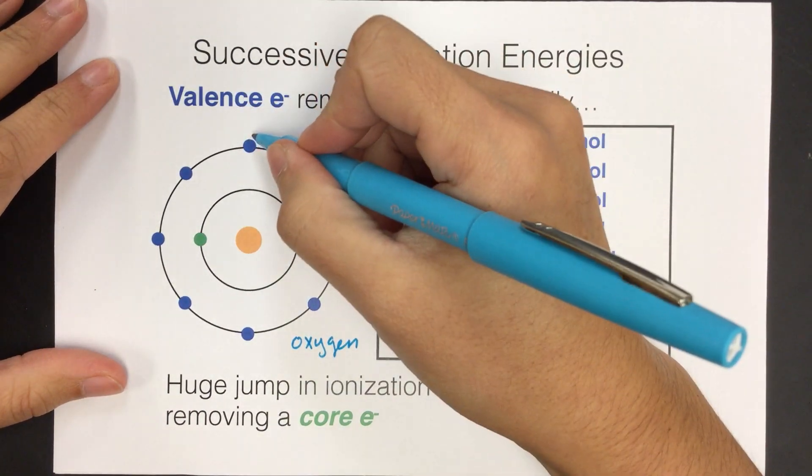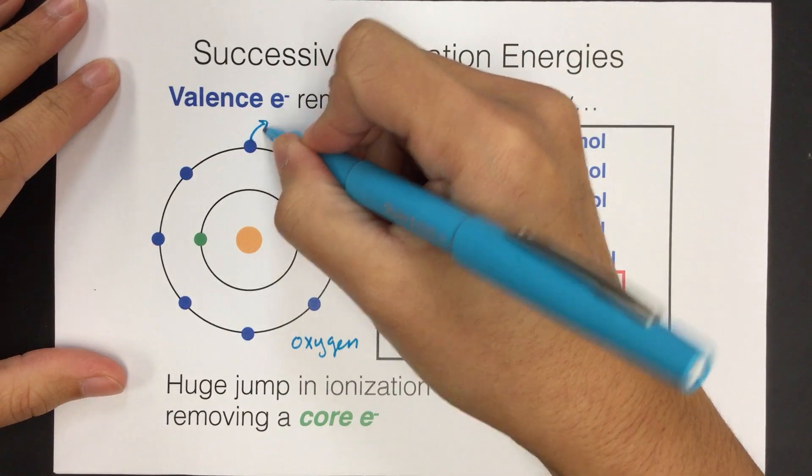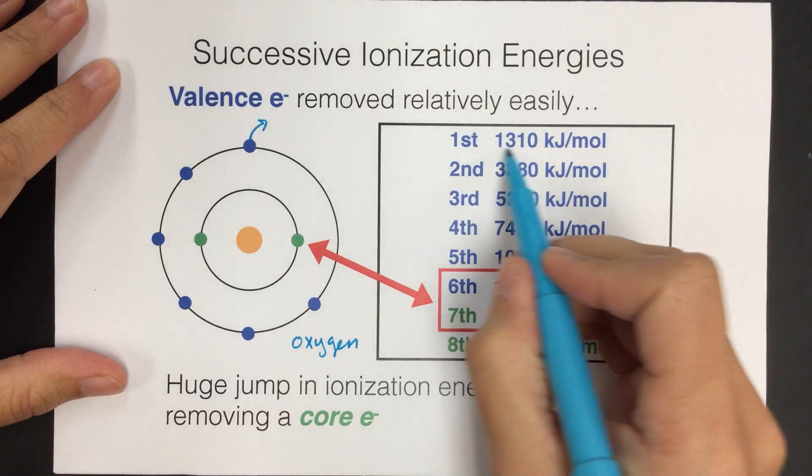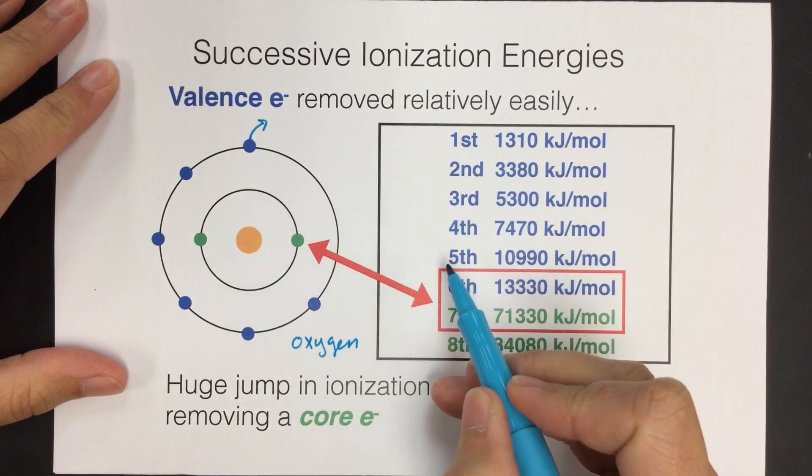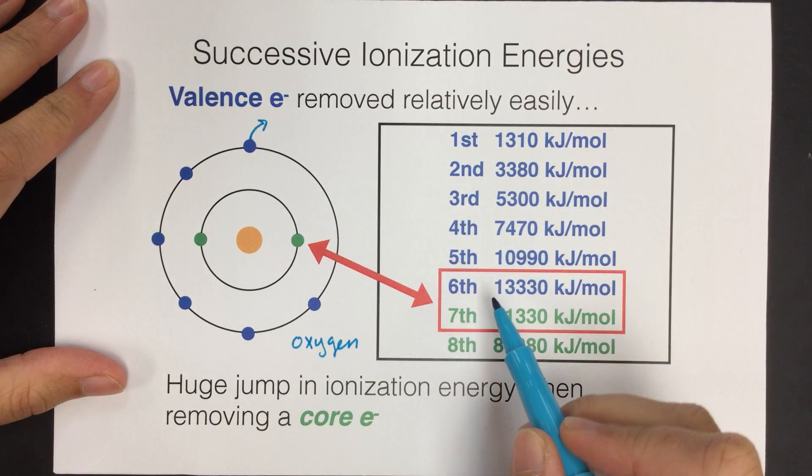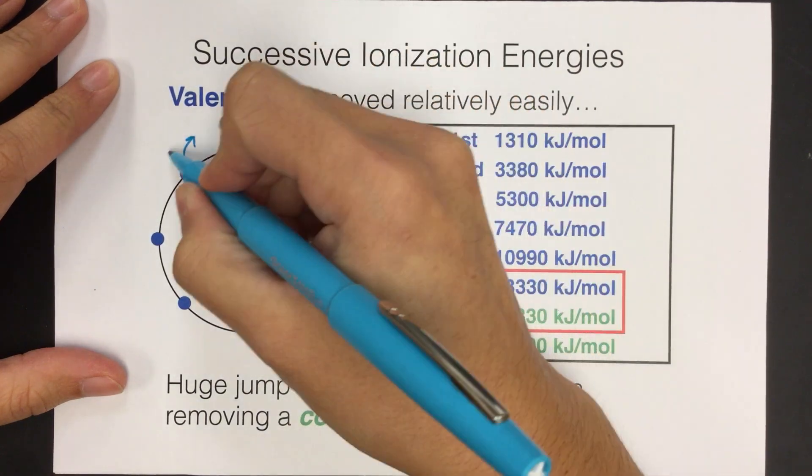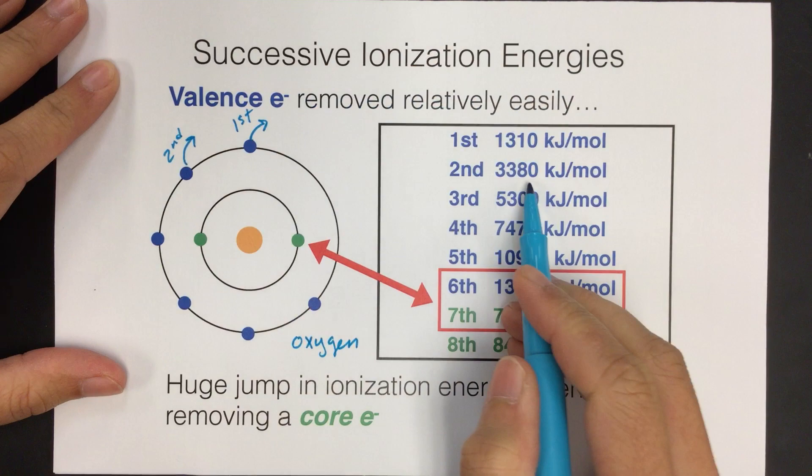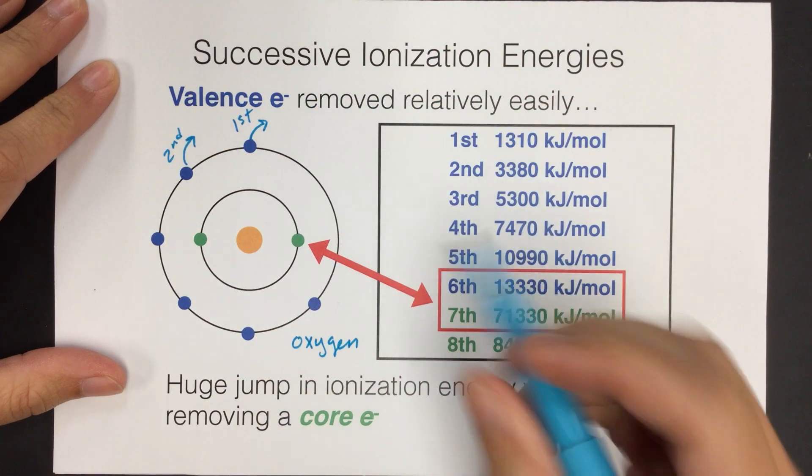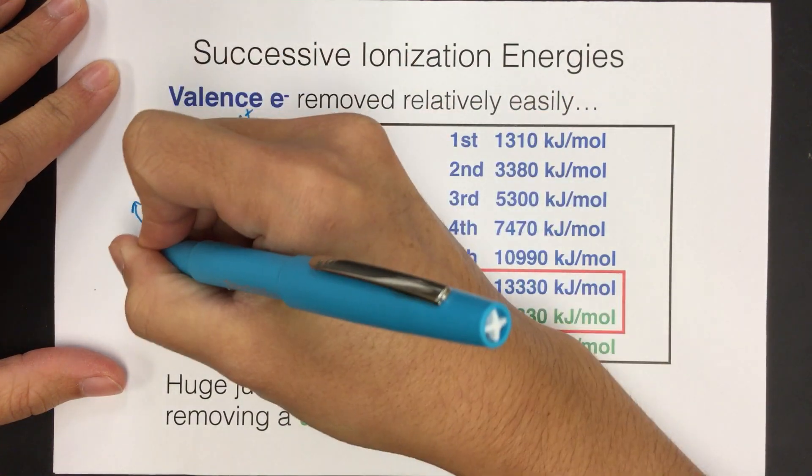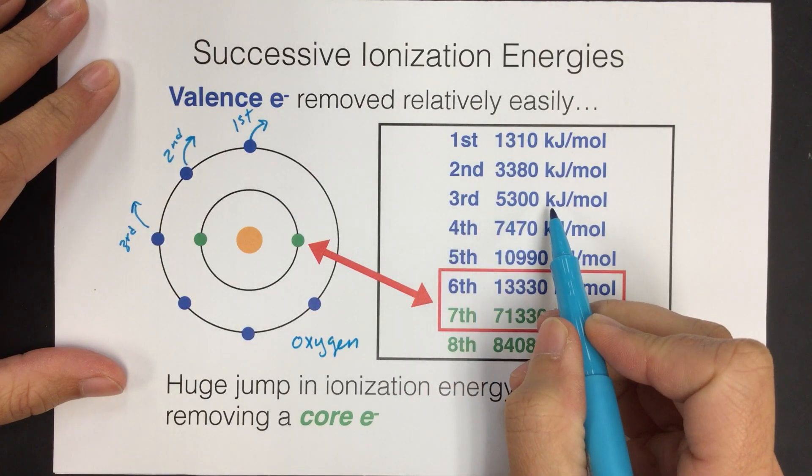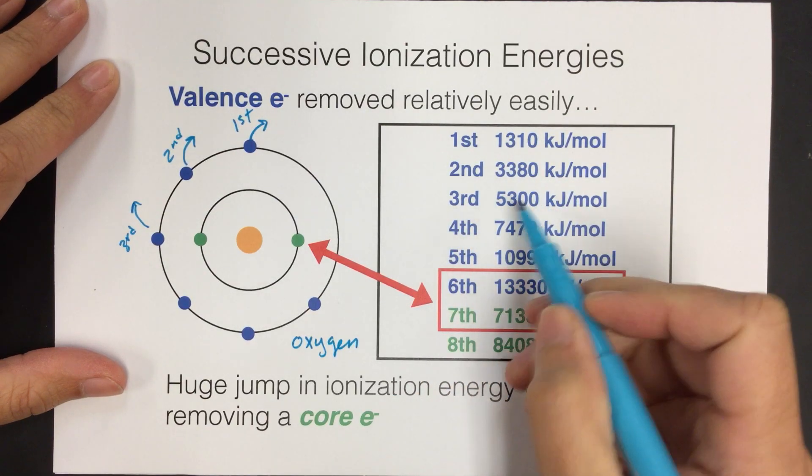So let's say if I remove this electron here, that's the first one, it requires this much energy. So that's what this little chart represents. And then if I remove another one, the second one, it's going to require a little more energy, just a little bit. And then I remove another one, the third. It requires this much energy. And you can see it's going to go up a little bit each time.